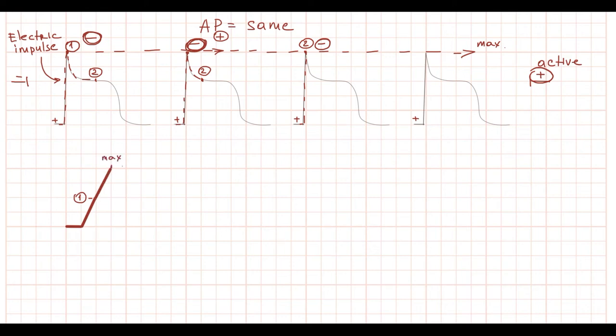When the third cell depolarizes, the vector decreases, and the active electrode registers this as decreasing elevation.